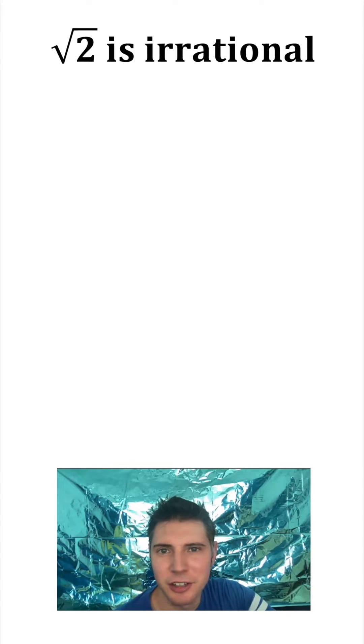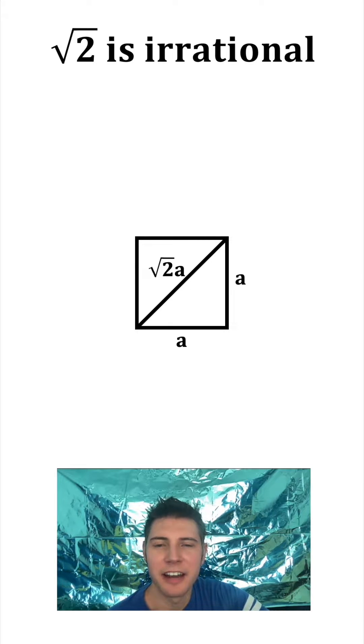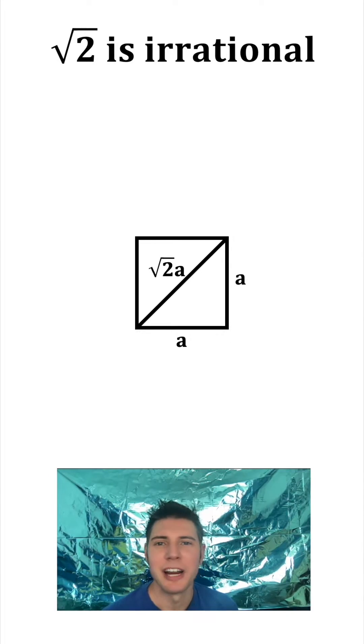So let's talk about why the square root of 2 is irrational. For any square on the planet, if it has side lengths A, the diagonal will always be root 2 times A. And that's true for any square.